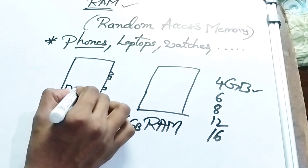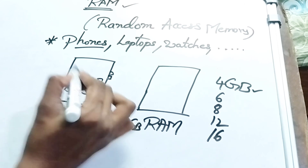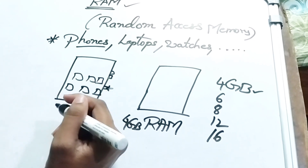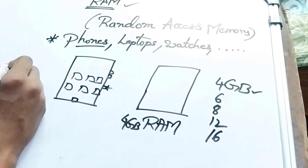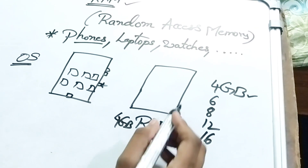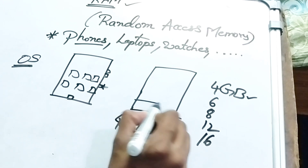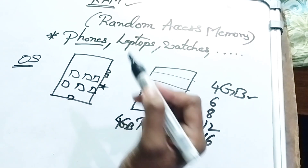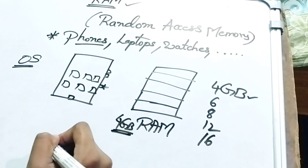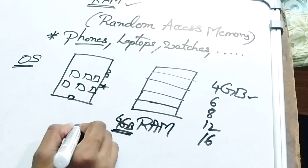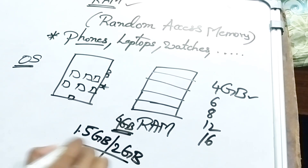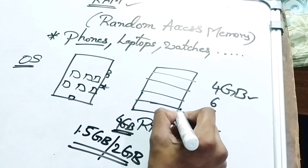There are many applications and an operating system on this phone. If we power on the phone, automatically the RAM is used. There is an operating system loaded. For example, with 4GB RAM, the operating system takes approximately 1.5GB to 2GB.